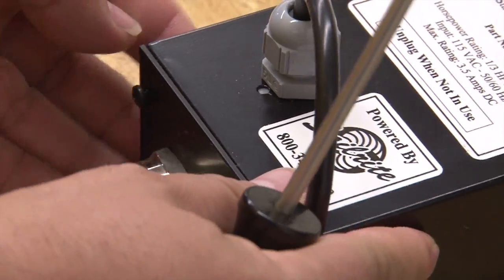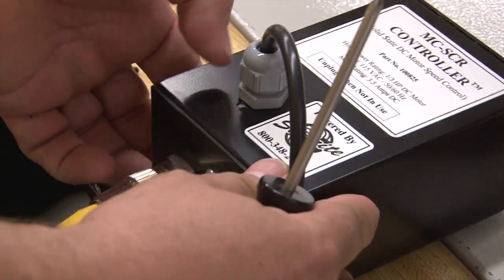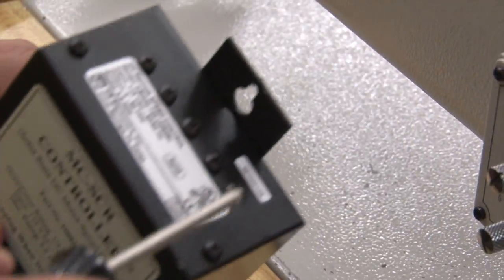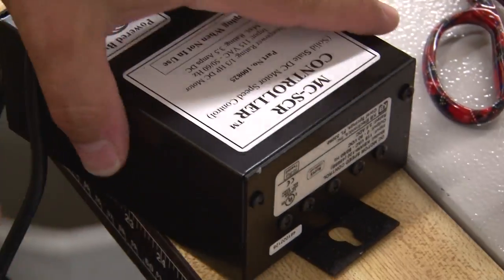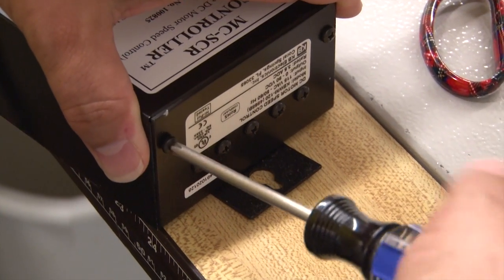On the control box there are four screws. There's one, two, three, four that must be removed. And before you remove these you obviously want to unplug the control box which I have already done.